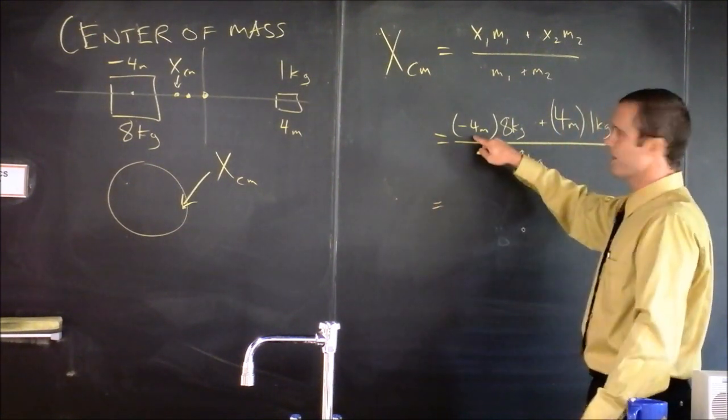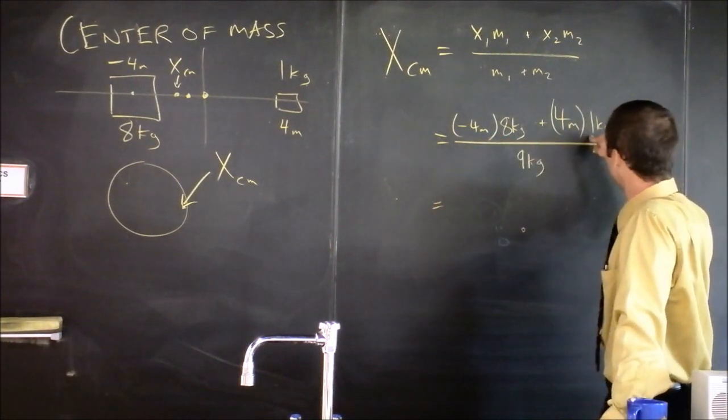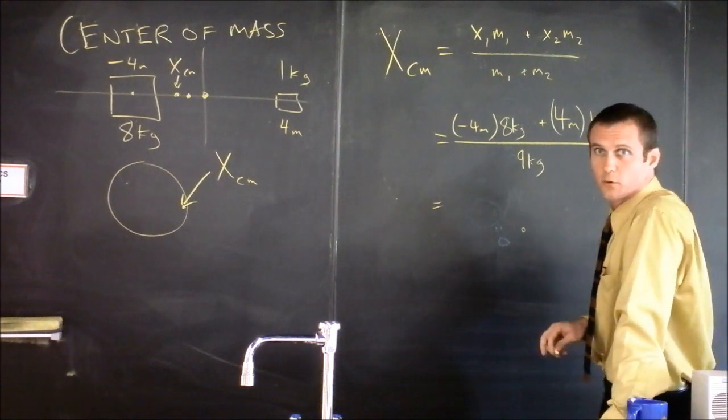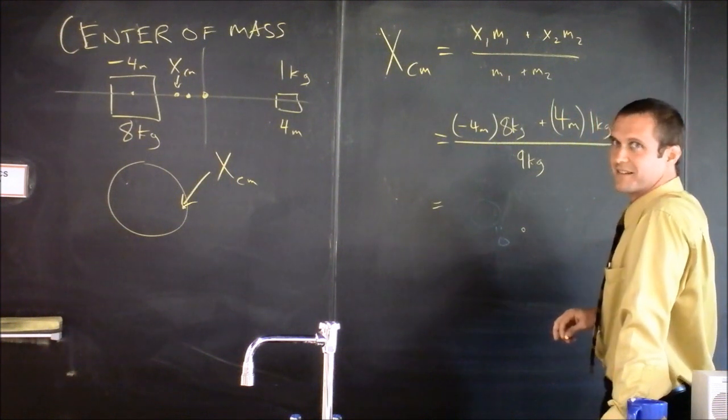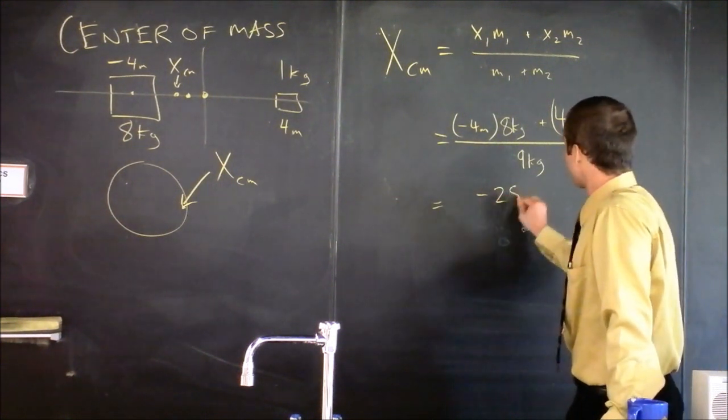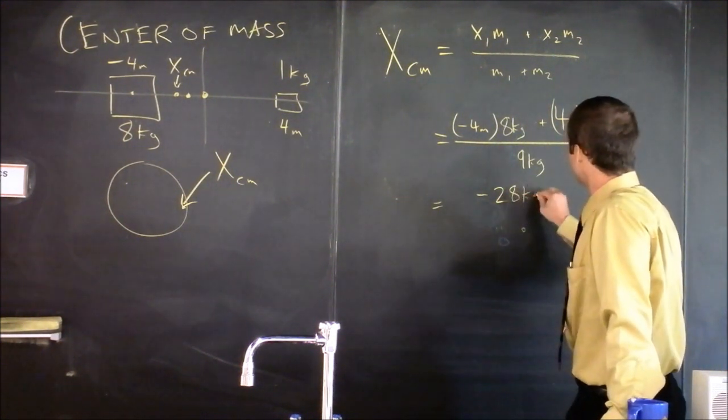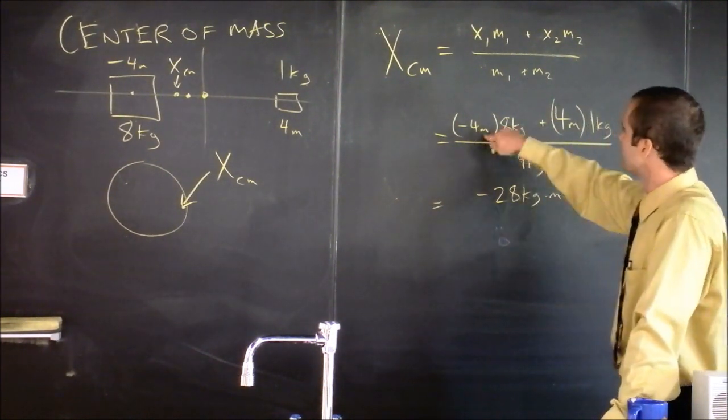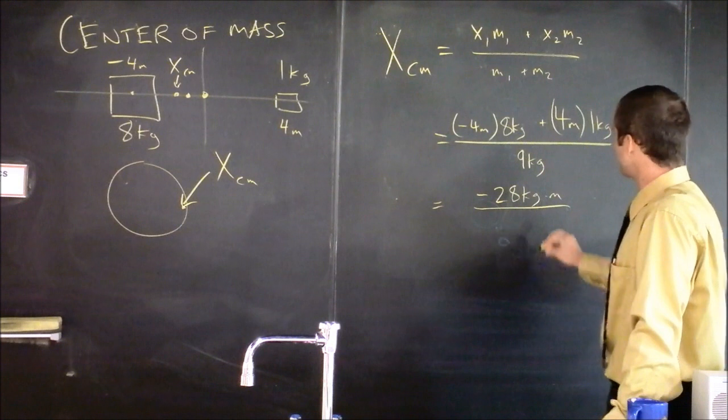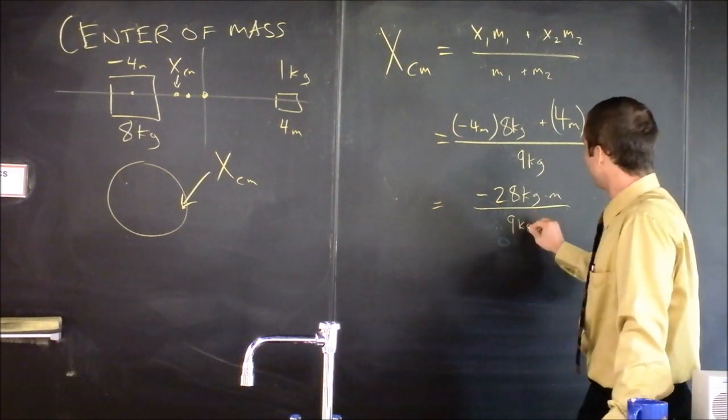And we get, oh man, this is negative 32 and this is 4. What's negative 32 plus 4? Oh, negative 32 plus 4. Oh, 28. Very good. But negative, right? Negative 28 kilogram meters. Kilogram meters. That's that weird unit right there. And then I'm supposed to divide that by 9 kilograms.